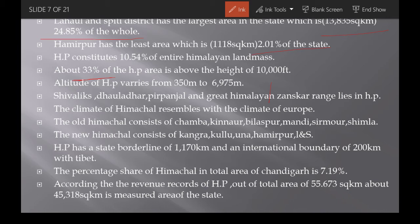33% of Himachal Pradesh's area is above 10,000 feet. The altitude of HP varies from 350 meters to 6,975 meters. Himachal Pradesh has four main mountain ranges: Shivaliks, Dhauladhar, Pir Panjal, and the Greater Himalayan Zanskar Range. The climate of Himachal Pradesh closely resembles that of Europe.